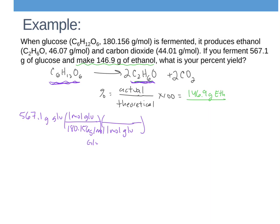The mole ratio I just saw from my equation is one mole of glucose for every two moles of ethanol. And according to the question, for every one mole of ethanol, there is 46.07 grams. Now that gets me into grams of ethanol, which is going to give me my theoretical yield that I can use to plug in.